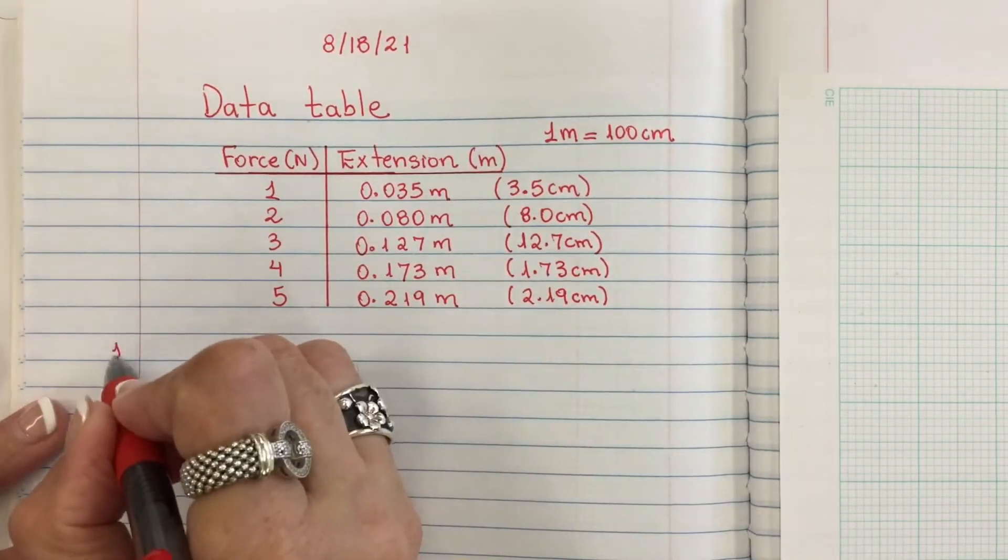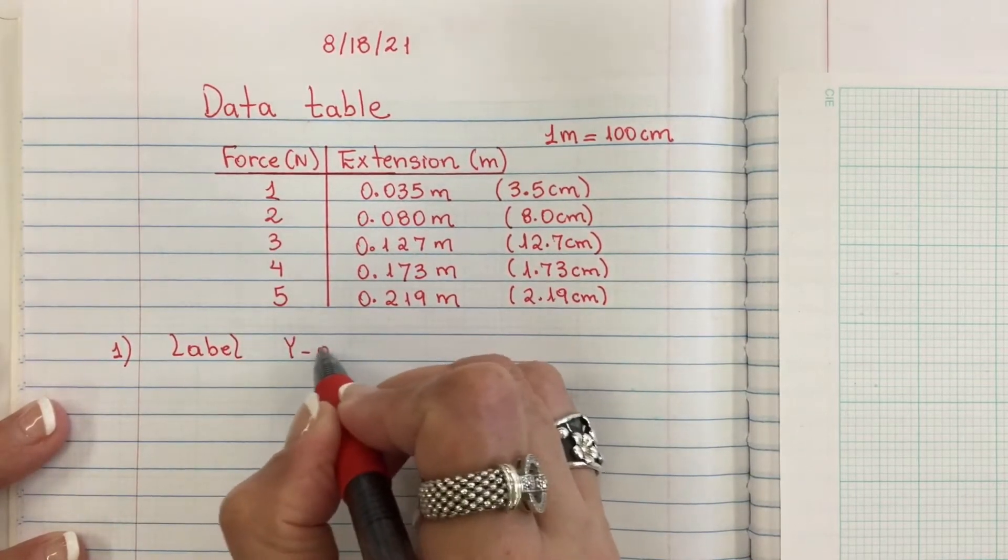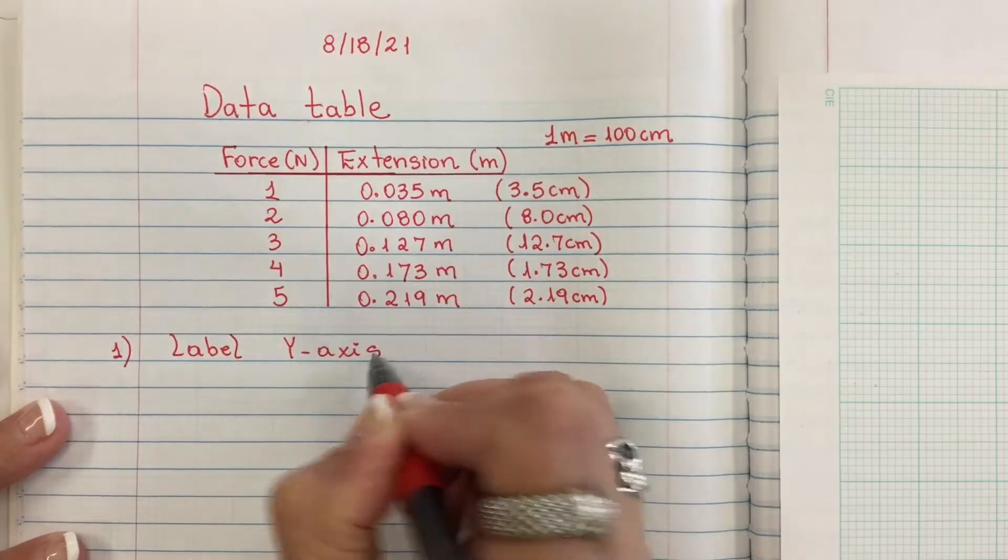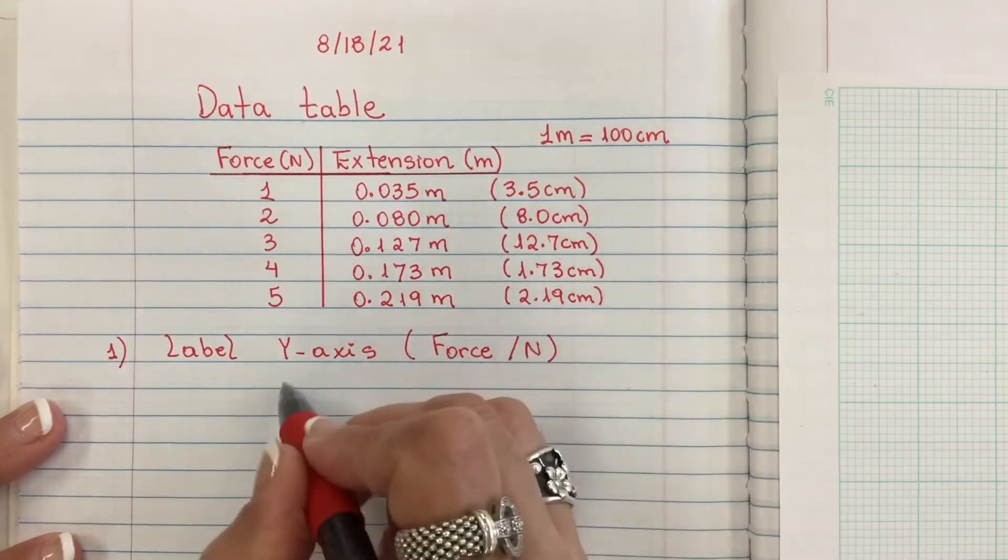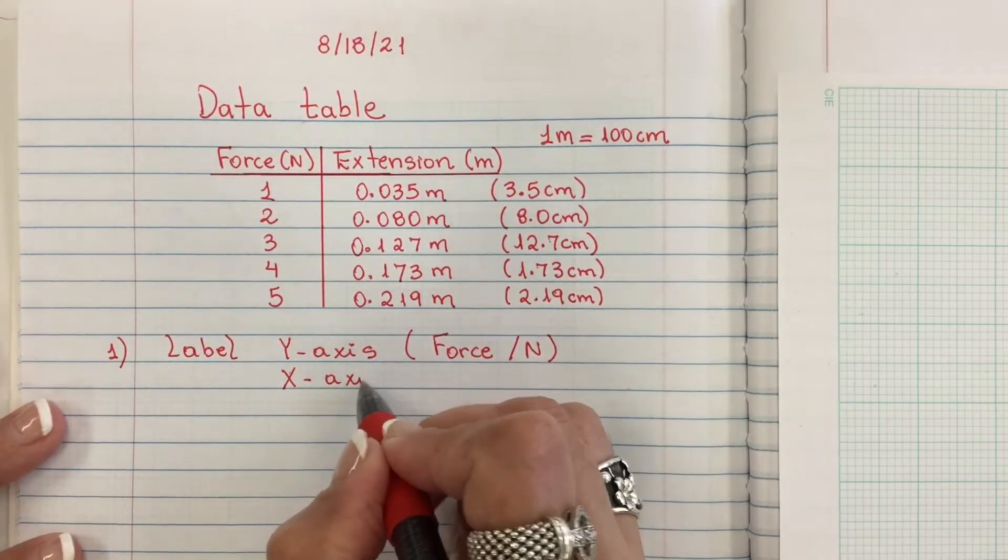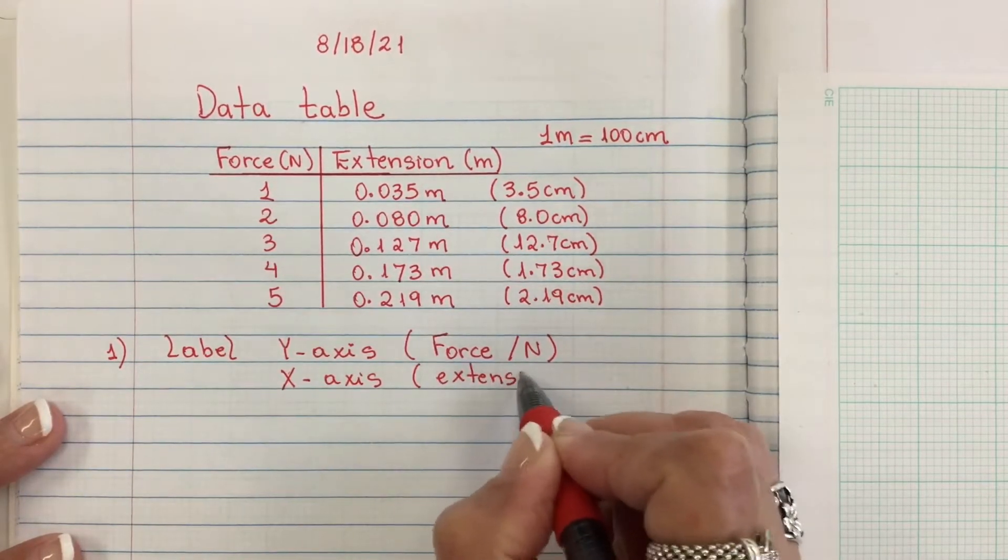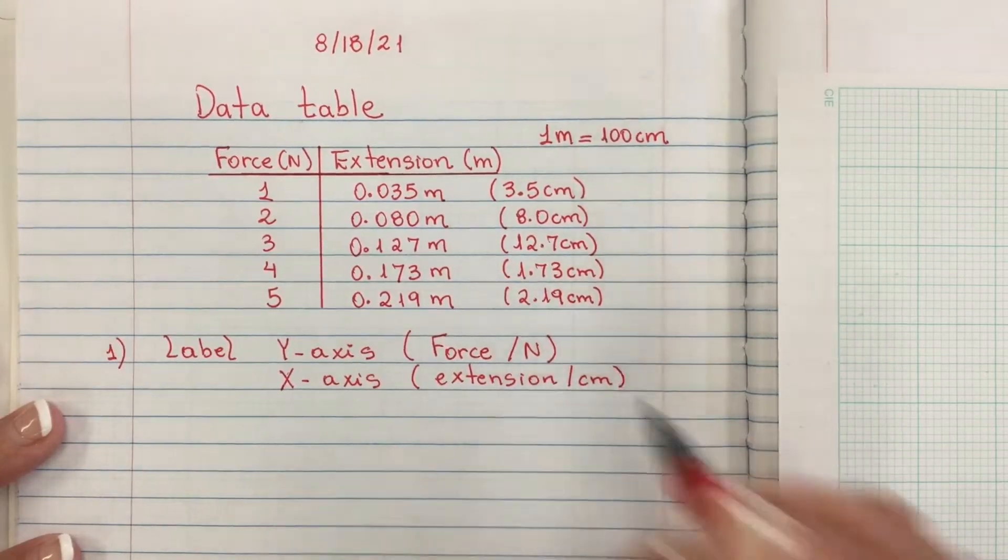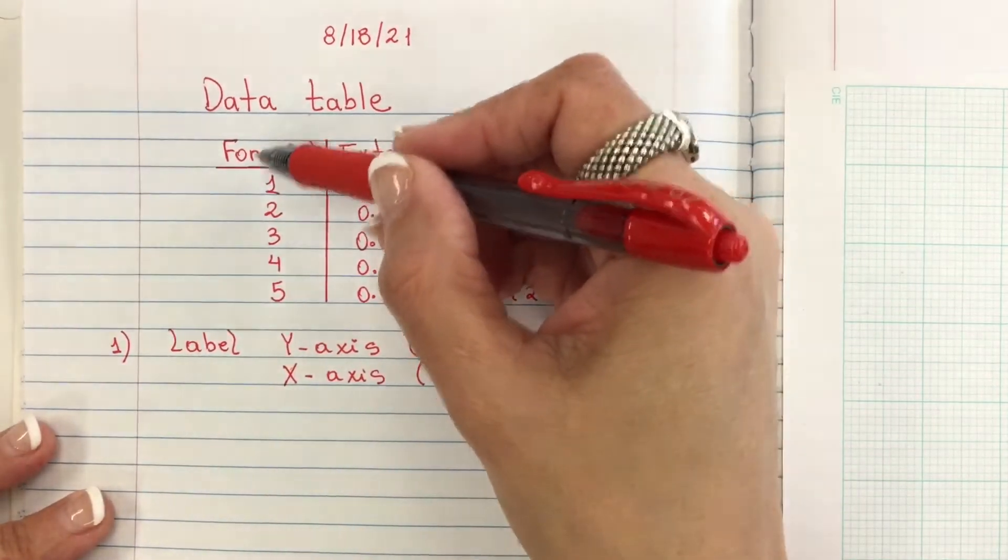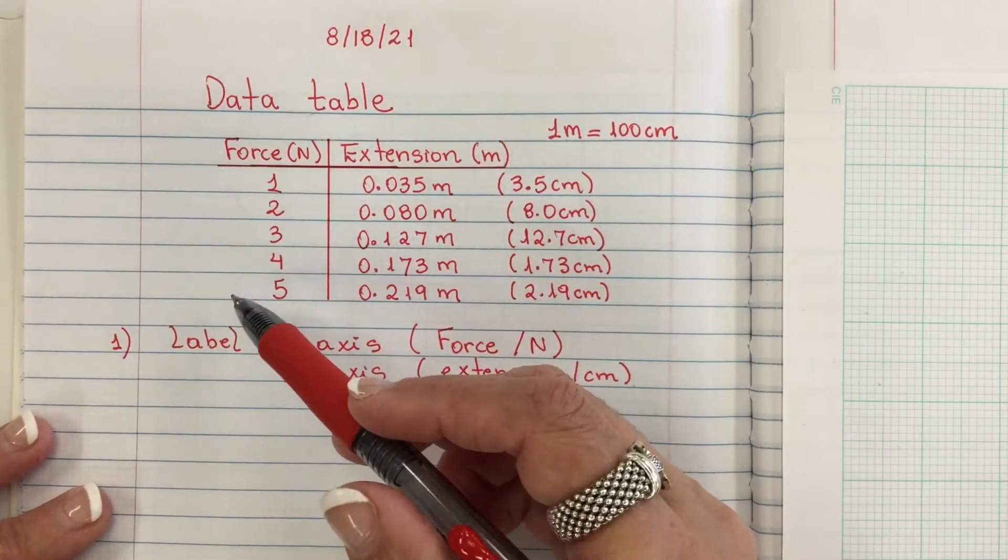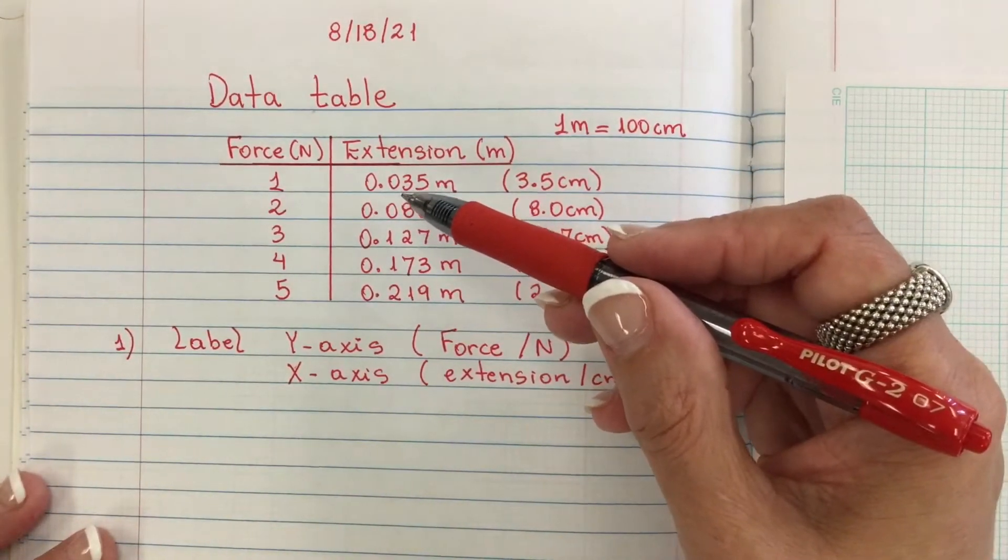First, I'm going to label my y-axis with force in Newtons and my x-axis with the extension in centimeters. Please note that the force is my independent variable, it's the one that I manipulate, and the extension is my dependent variable.